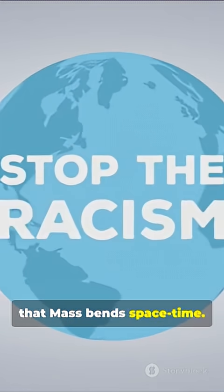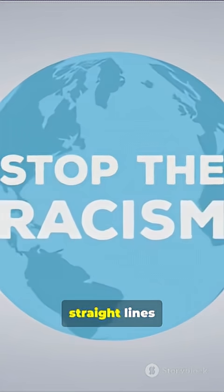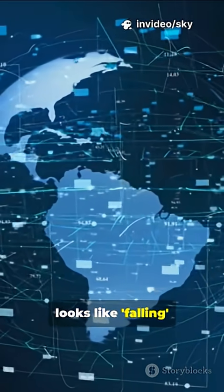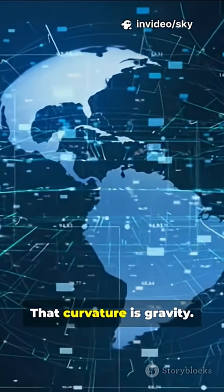The key idea is that mass bends space-time. Objects move in straight lines through that bent space-time, and that motion looks like falling or orbiting. That curvature is gravity.